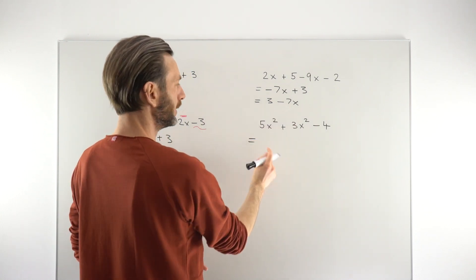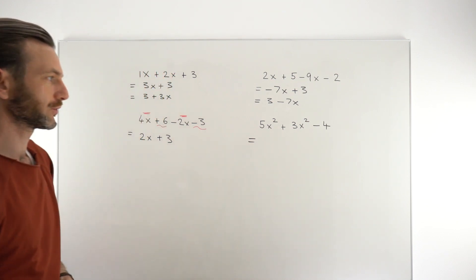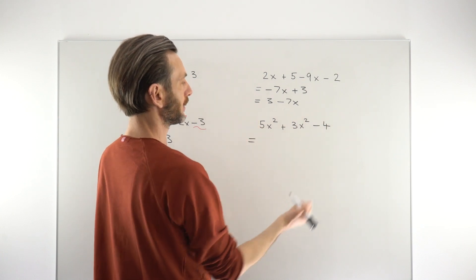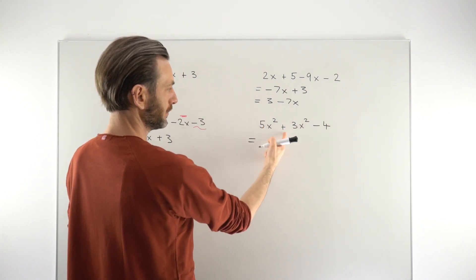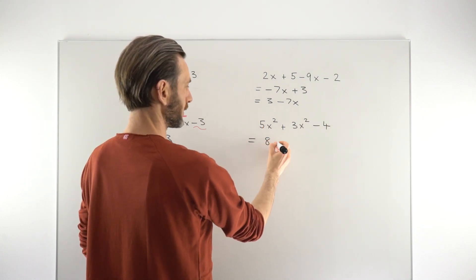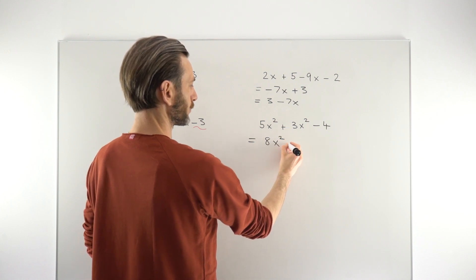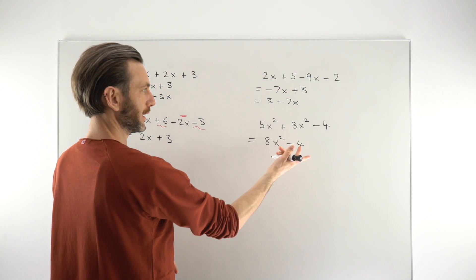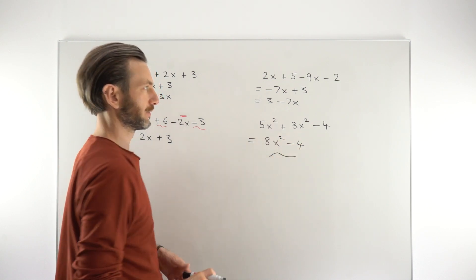The final one is a slightly different looking expression. We've got some squares in there, but it doesn't matter - these are the like terms, they're alike, they're both squares. Five of them plus three of them gives us eight of them, so 8x² - 4. No negative here, so we don't need to spin it around. That's just the final answer for that one.